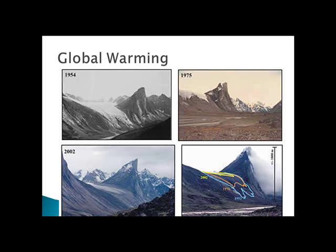That doesn't sound like a lot, but it really is. The Intergovernmental Panel on Climate Change (IPCC) concludes that anthropogenic — man-made — greenhouse gases are responsible for the majority of the observed temperature increase since the middle of the 20th century. Natural phenomena such as solar variation and volcanoes probably had extremely small warming effects in pre-industrial times and a small cooling effect afterwards.